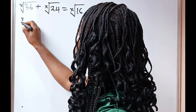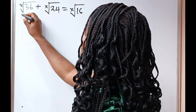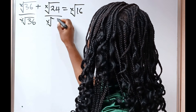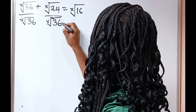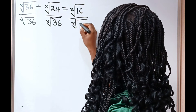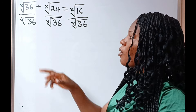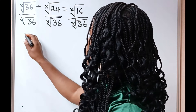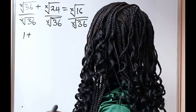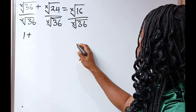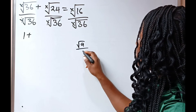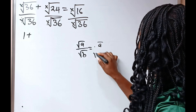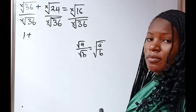So we have x-root of that divided by x-root of 36, this divided by x-root of 36, this divided by x-root of 36 as well. Now when this is divided by itself, you will have 1, so we have 1 plus. Note that when you have root a divided by root b, this is equal to root of a divided by b.